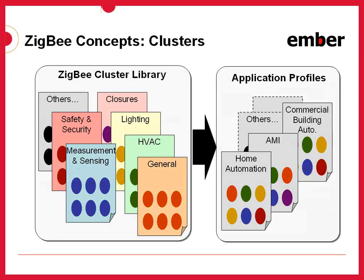To depict this graphically: we have a set of clusters which are grouped into functional domains. The collection of all clusters in all domains is the Zigbee Cluster Library, and then you mix and match clusters from different domains into application profiles to suit the needs of devices within that profile. A simple thing like on-off could exist across different profiles, so you might see that same cluster appear in multiple application profiles.